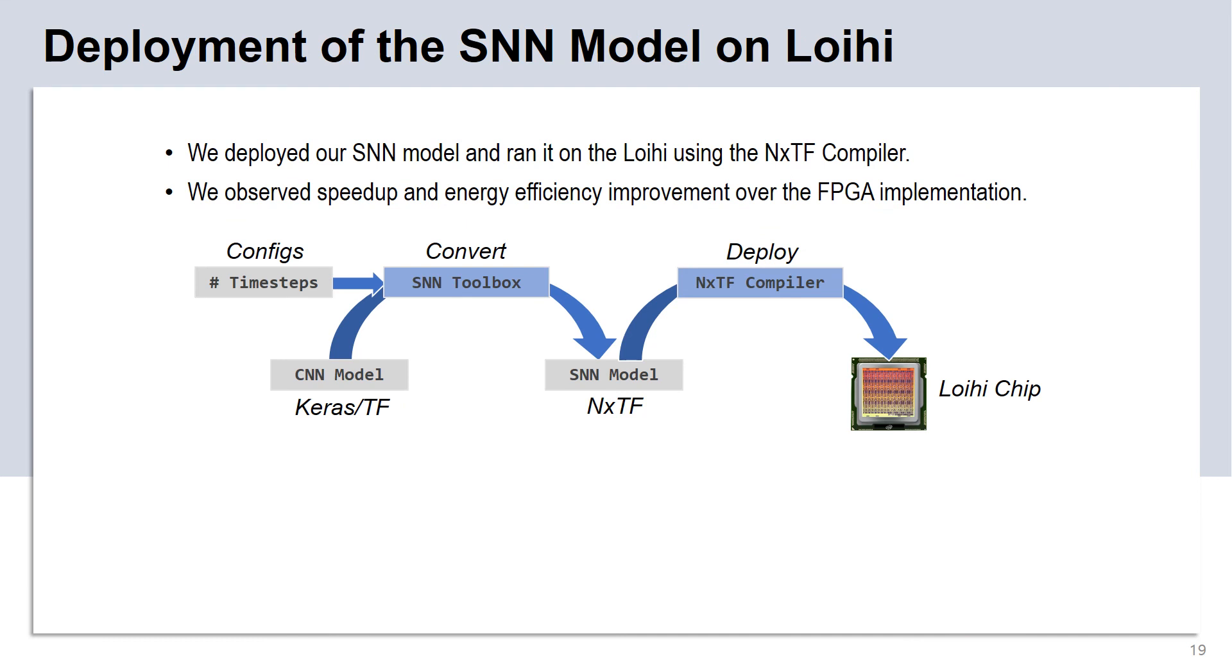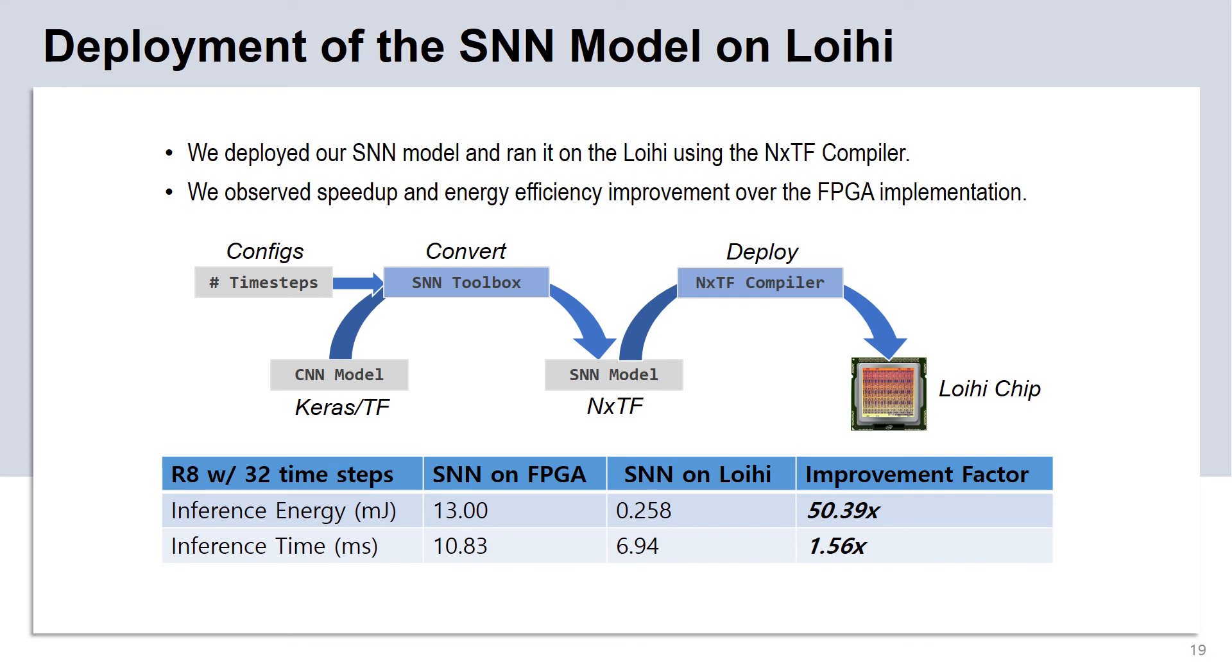We also implemented the converted SNN model on the neuromorphic processor Lohi. For the R8 rat, our implementation consumes 15 neuron cores. It takes 6.94 milliseconds and 0.258 millijoules to finish one SNN inference under 32 time steps. Compared to the FPGA implementation, it achieves 1.56 times speedup and over 50 times energy efficiency gain.